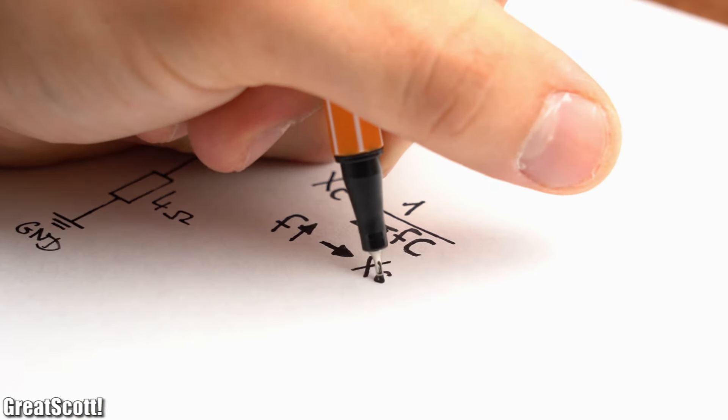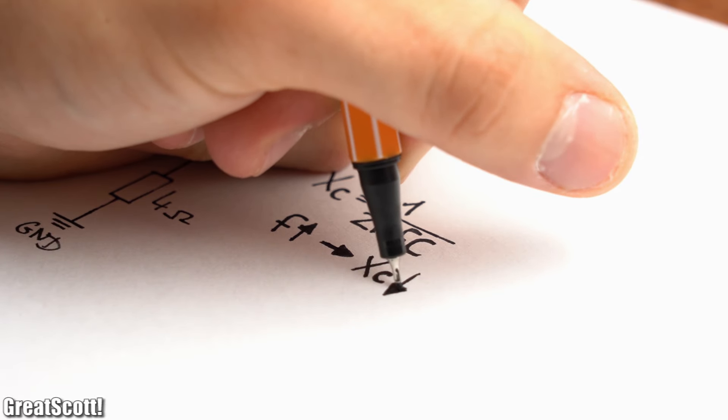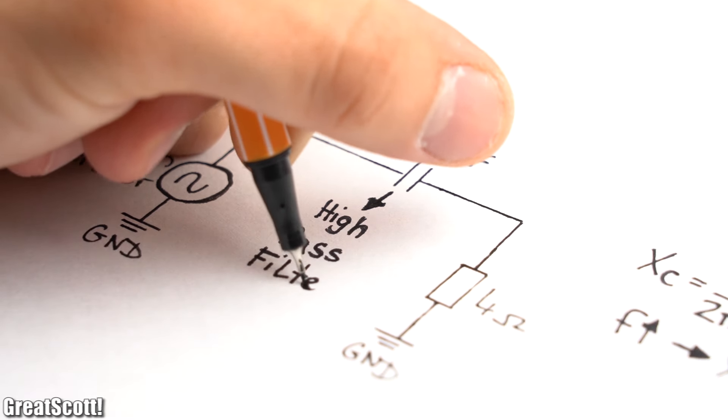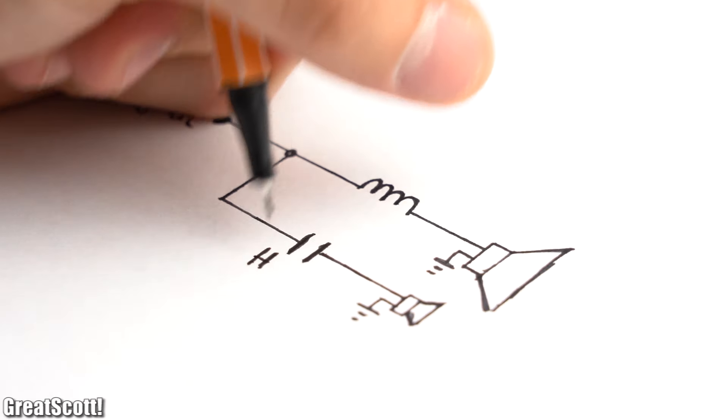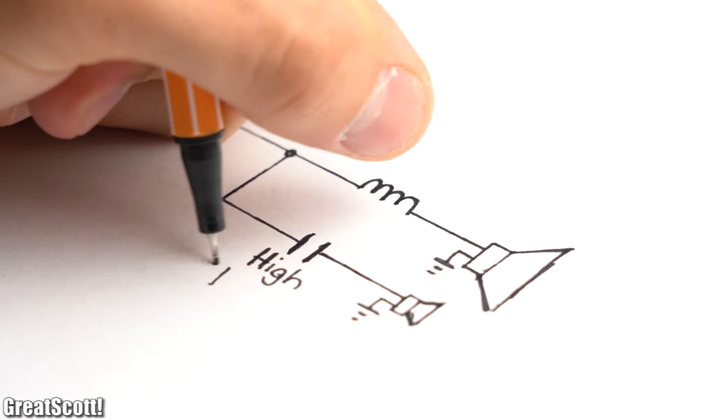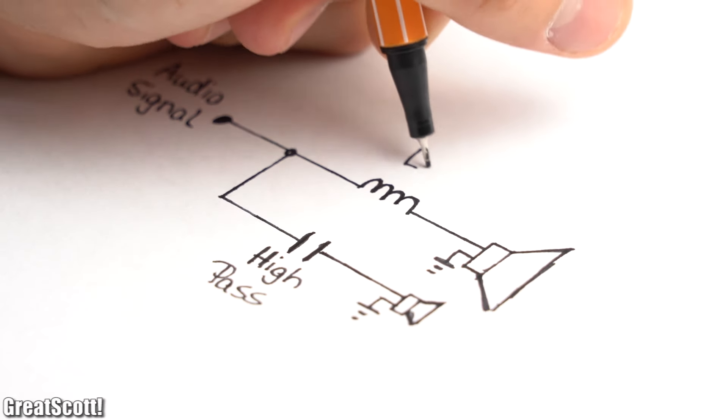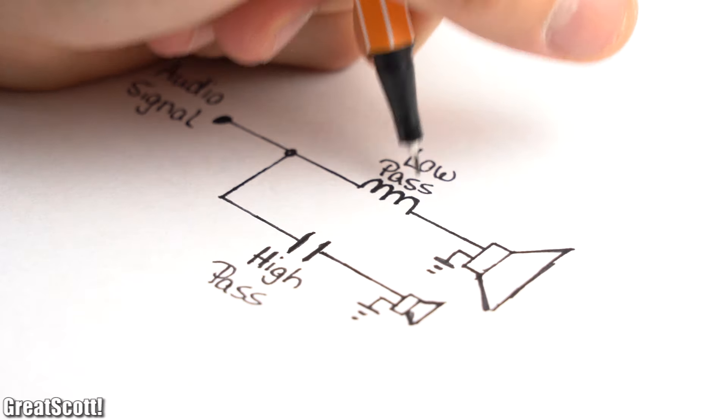Once again the reactance, in this case the capacitive reactance, is responsible for the high resistance at low frequencies. That means a capacitor alone would act as a high-pass filter. With this knowledge all we would have to do is connect a suitable inductor in series to the woofer and a capacitor in series to the tweeter in order to create a simple crossover.